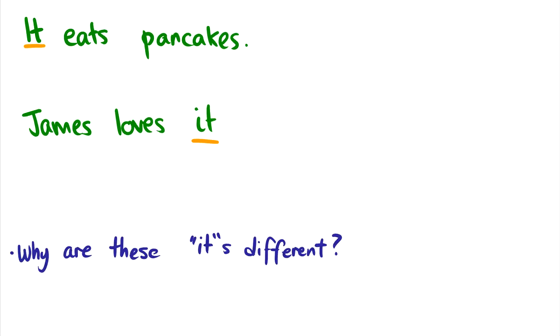In these examples, it eats pancakes, James loves it, these it's are different because they refer to things in the world. So this refers to something in the world. Maybe this is the person. This is some dude who eats pancakes. James loves it. Perhaps this it is his little doggy friend. I can't draw dogs very well. In fact, some of you may think that this is a pig, or perhaps if I give it a long fluffy tail, it might be a nice little squirrel. But this it refers to something in the discourse, which is different from the expletive it.